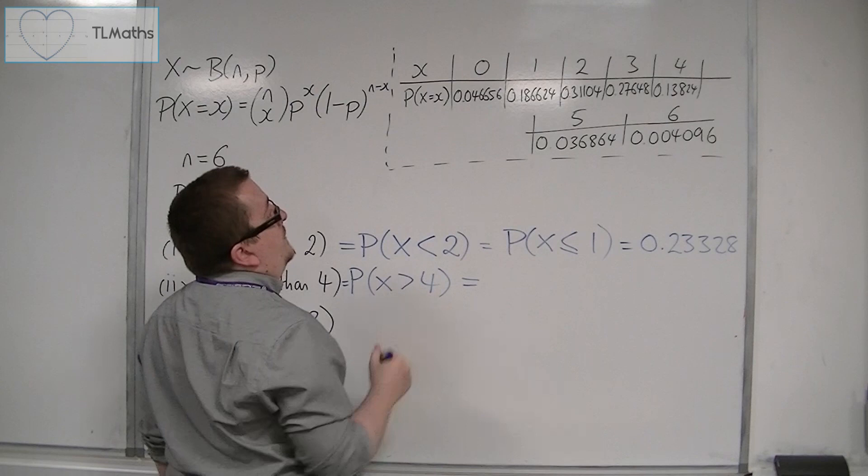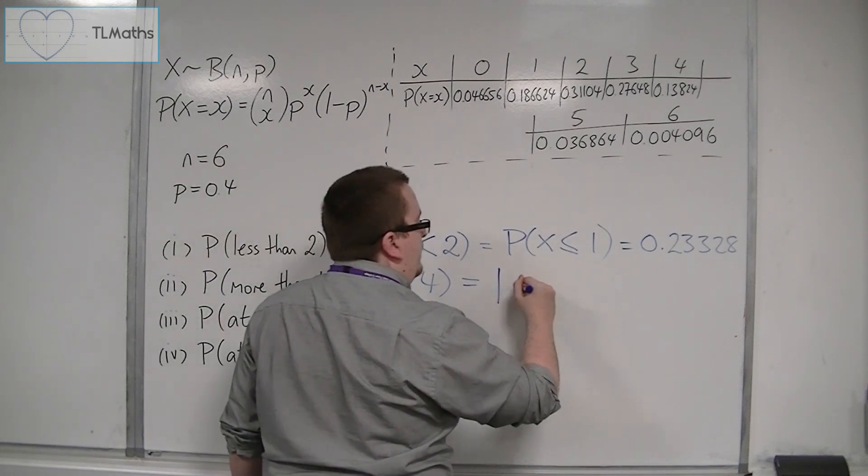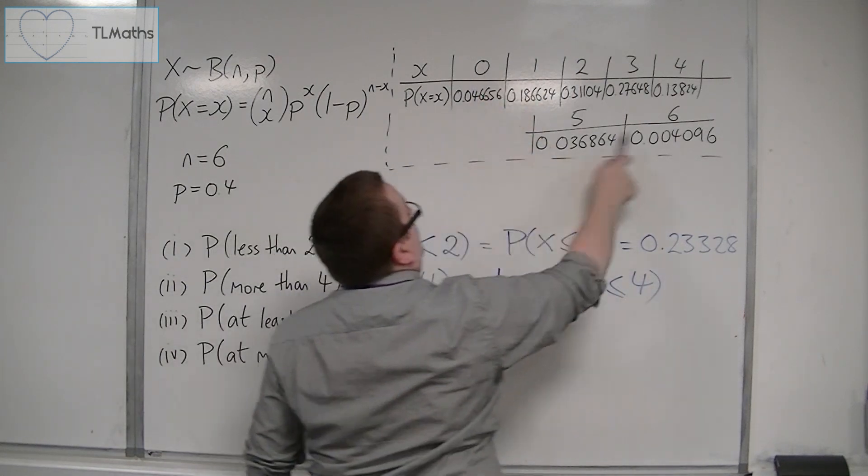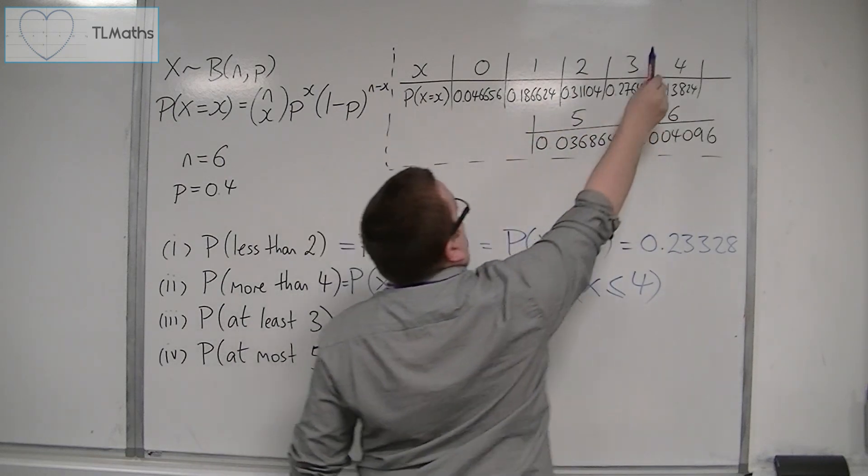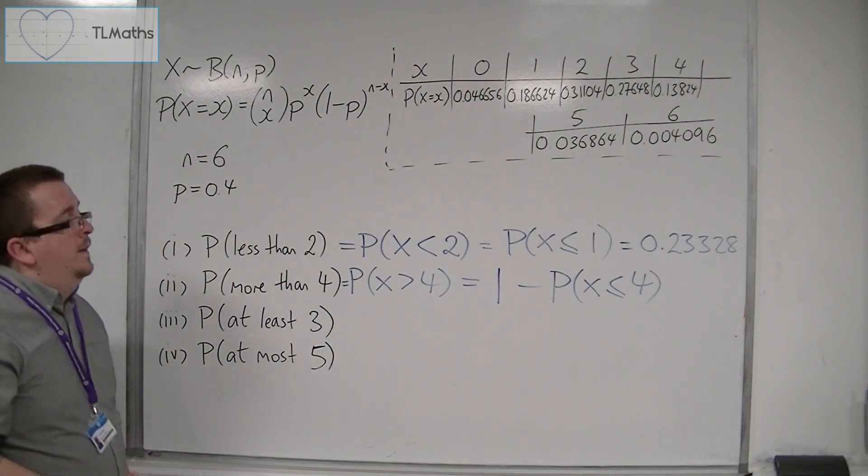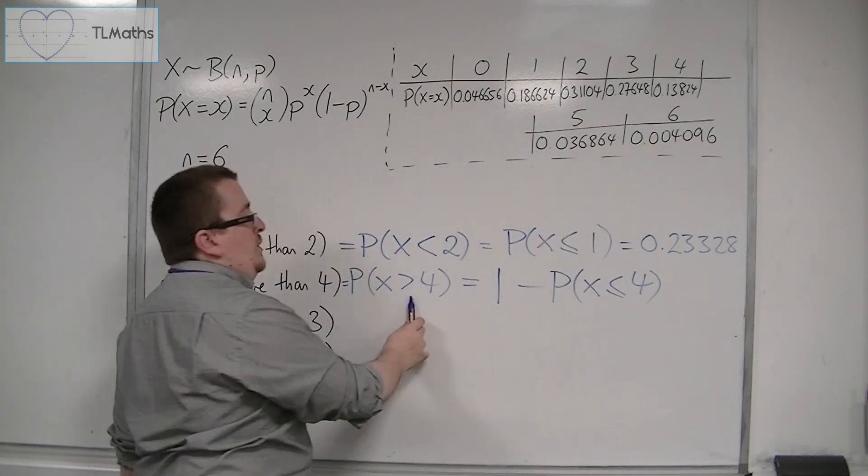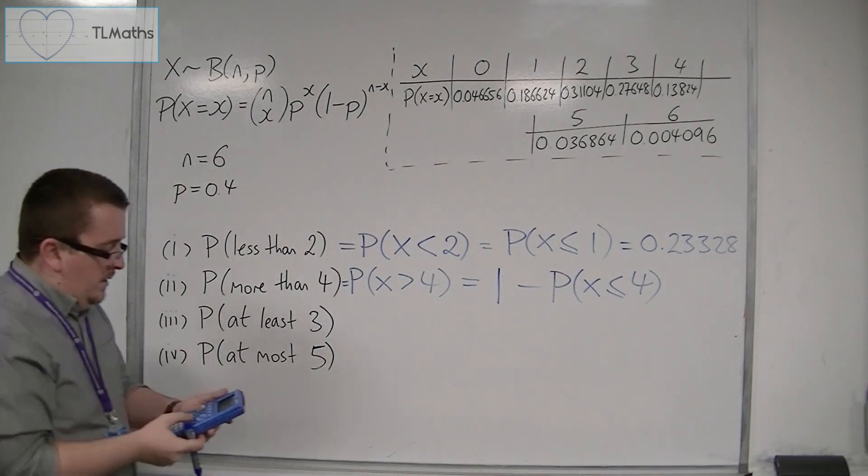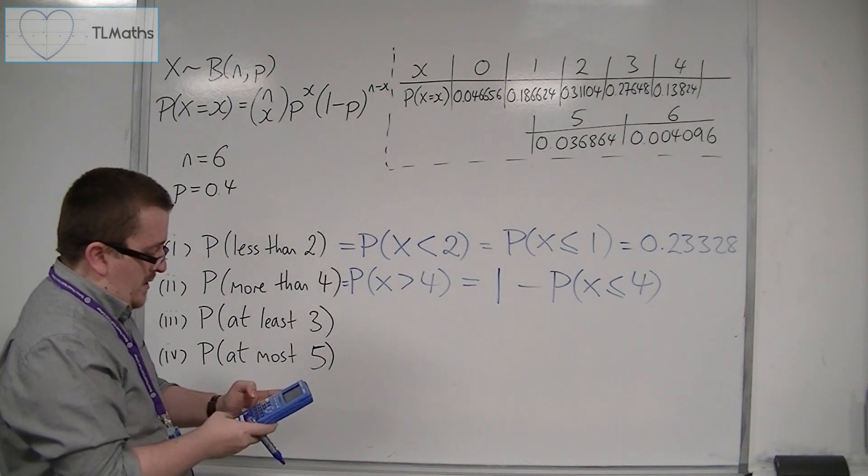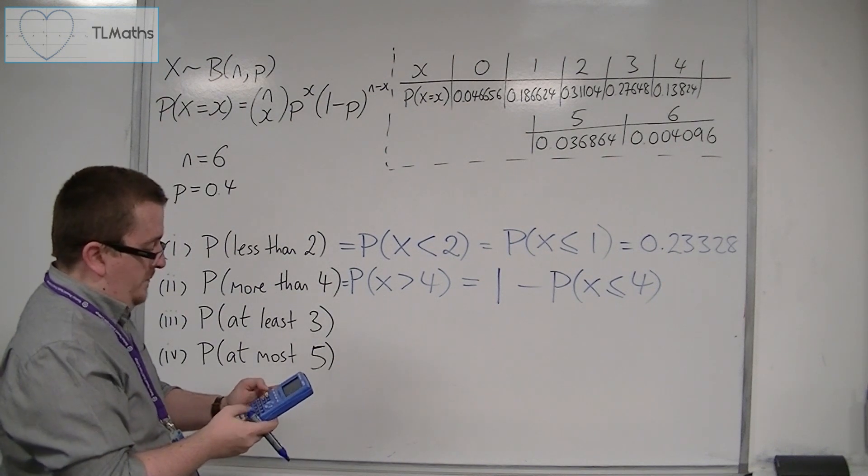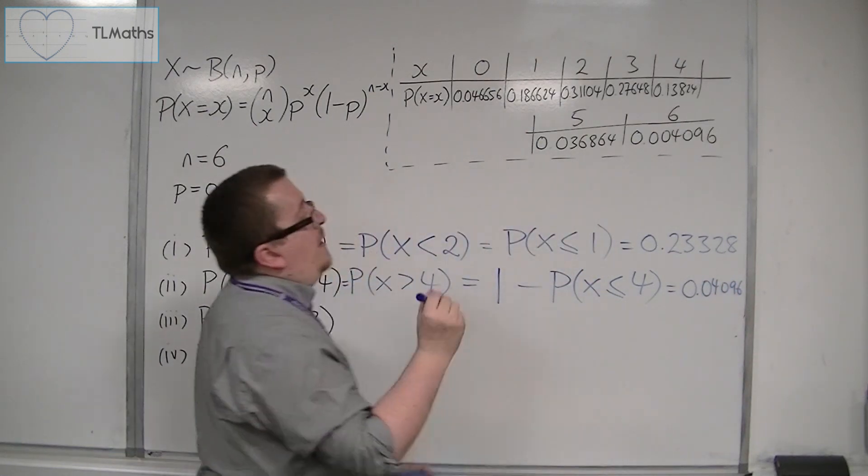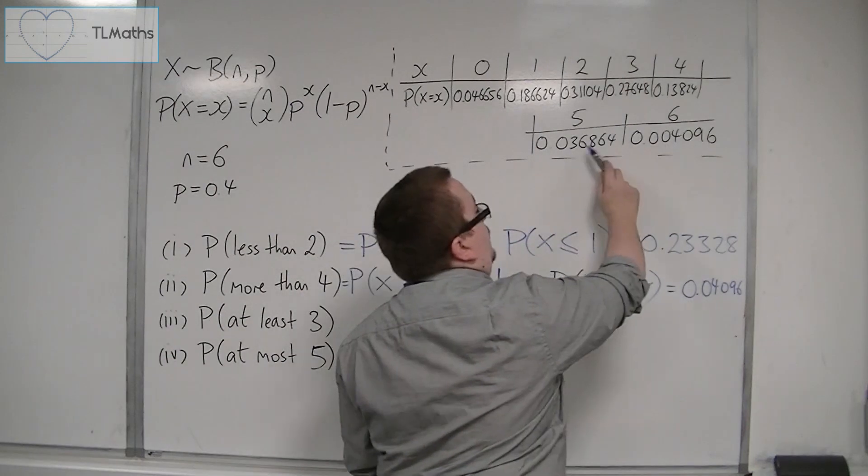So if I'm going to calculate this with the blue calculator, then the way to get 5 and 6 is to do 1, take away the probability of x being less than or equal to 4. So I have the whole lot of the table, so 1, take away these bits that I don't need, those 5 bits, 0, 1, 2, 3, and 4. And that will leave me 5 and 6, which is the ones that I want. So if we do 1 take away binom CDF, 6, 0.4, 4, then we get 0.04096. And that will be the same as adding those two values together.